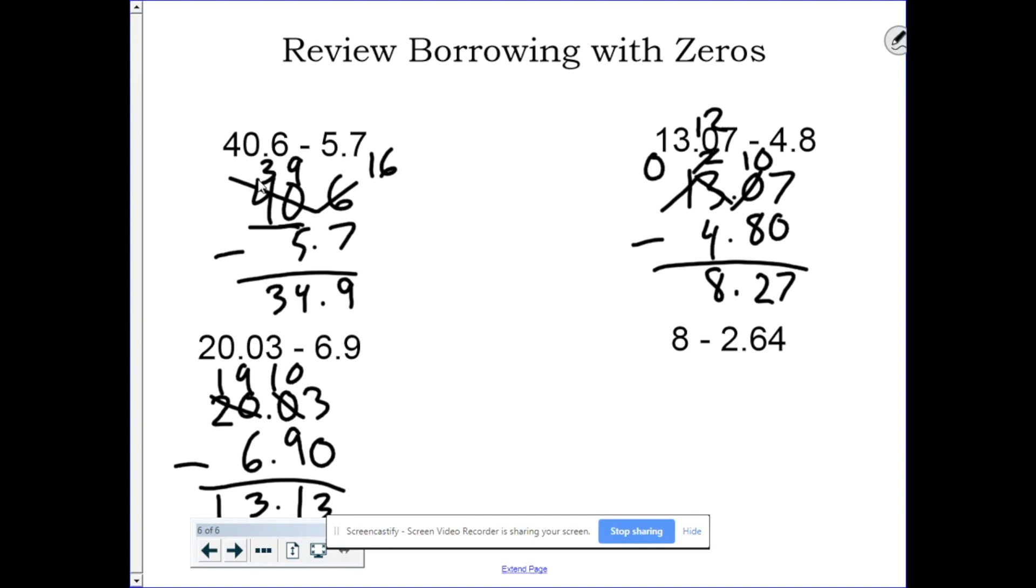Okay, last one. 8, and remember our decimal point is right after the ones place if we need it, minus 2.64. Now, this is where students make mistakes.